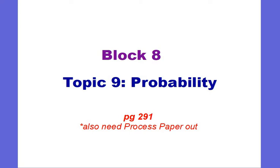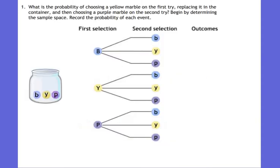So we're going to look at some compound events today and an easy way to see the outcomes of a compound event. On the first problem, I have a jar with three marbles — blue, yellow, and purple. This is called a tree diagram. A tree diagram helps me see all the possible outcomes.